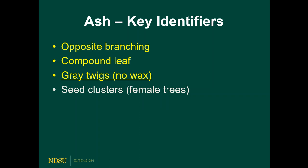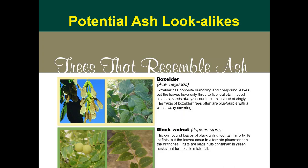The key identifiers for ash trees are the following: ash trees have opposite branching and carry compound leaves on twigs that are usually gray without the white waxy bloom found on box elders. Also, the seeds found on the female trees are pretty distinct, at least close up. That said, there are several trees that can be confused with ash based on those characteristics. We've already discussed box elder in depth, so here are the trees most commonly confused with green ash.